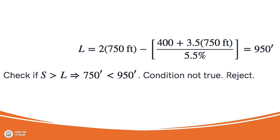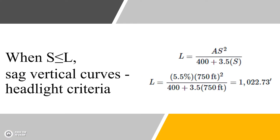The answer you get here is 950. Then you check whether the stopping sight distance is greater than the length. In this case, it is not — they gave you 750 and you solved for 950. So the condition is not true. We have to reject that and check the other scenario.